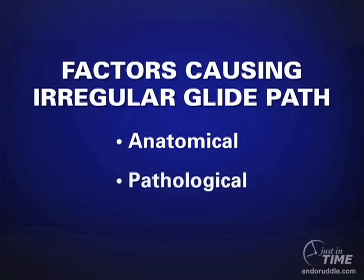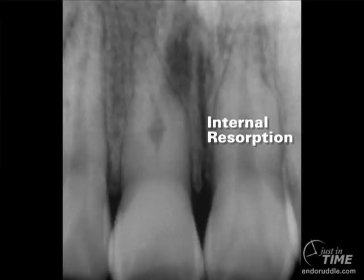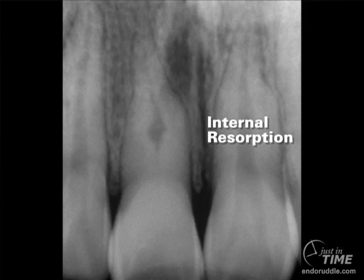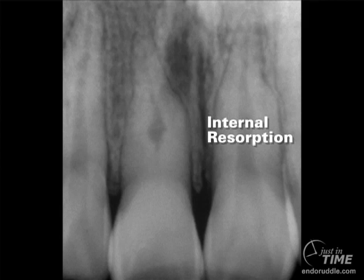There are other reasons for irregular glide path, and those would be pathological. When we think about cases that exhibit internal resorption, looking at a preoperative film, there's not a lot of working width coronally compared to the healthy contralateral tooth. Sliding an instrument through that more coronal remnant would take you into the resorptive defect at mid-root, but it would not be easy to insert the tip of a hand file into the more apical segment of the canal. In these instances, we might not initially have a glide path, but as we expand the shape manually, there may come a moment where we can resort to mechanical shaping.